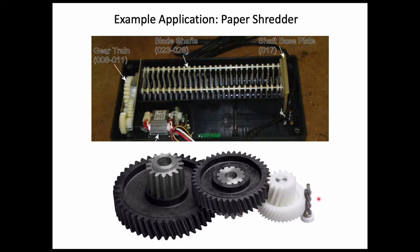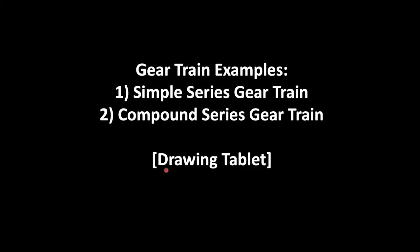In the paper shredder gear train, there's a large speed reduction between the first and second gear, then another reduction, then another, with each stage meshing into the next until the final gear drives the cutting teeth. We'll now go through a few gear train examples worked out by hand — first a simple series gear train, then a compound series gear train — to quantify and analyze these systems.